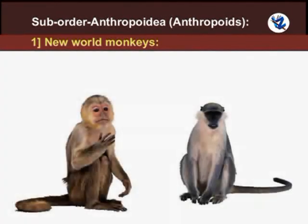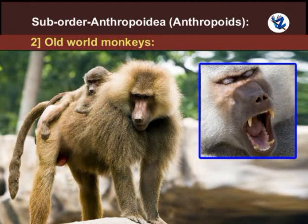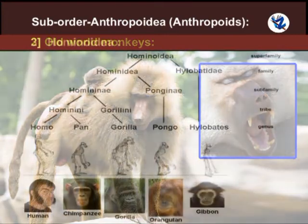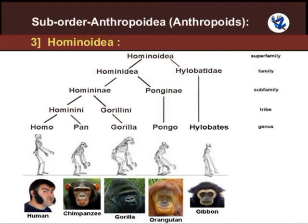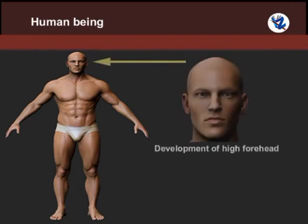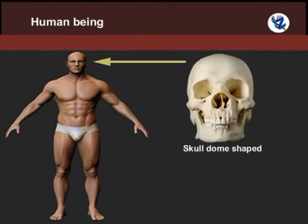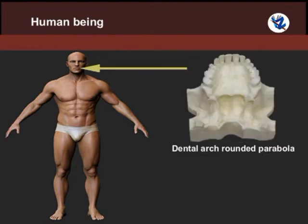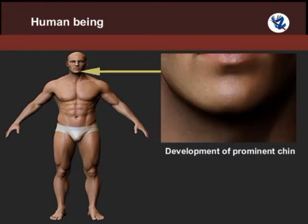Sub-order Anthropoidea includes new world monkeys with flat noses and widely separated nostrils; old world monkeys with narrow noses, short non-prehensile tails and 32 teeth; and Hominoidea, which includes apes and man. Apes have a slanting forehead, protruding snout with flat nose and large canine teeth. The special features of man are a high forehead, dome-shaped skull, elevated nose, rounded parabolic dental arch, small jaws and a prominent chin.